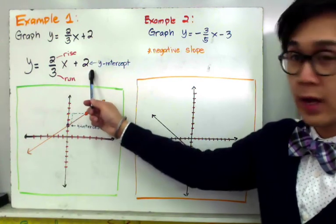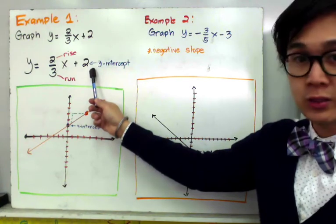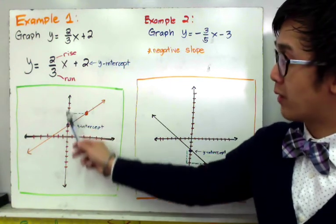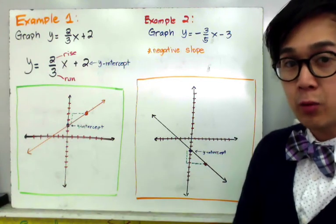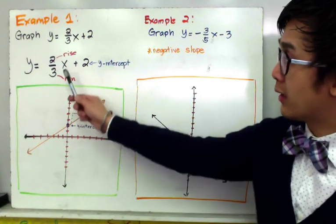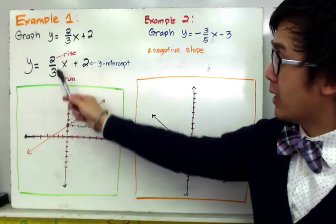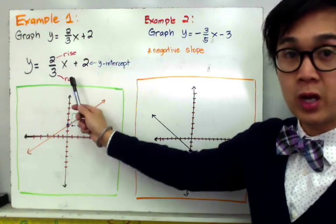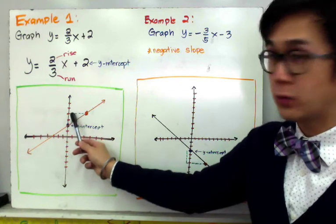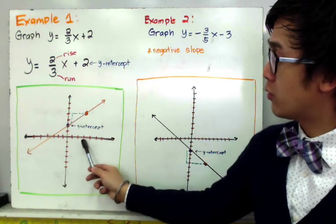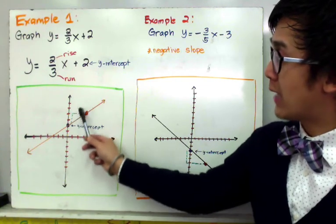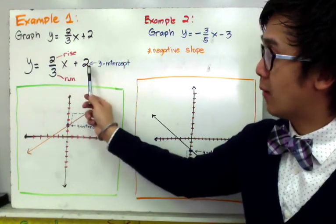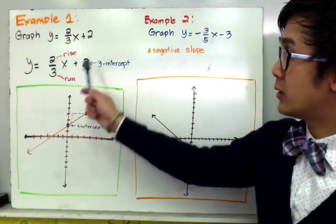The first step is to plot the y-intercept, which is positive 2, along the y-axis — right here at positive 2. To find the second point, use the slope: 2 is the rise, so move 2 units up, and 3 is the run, so move 3 units to the right. Once the second point is found, connect the two points to construct the graph of y = (2/3)x + 2. Plot the y-intercept first, then find the second point using the slope.